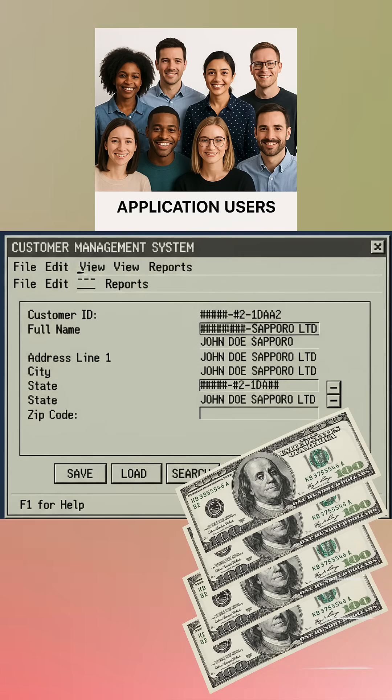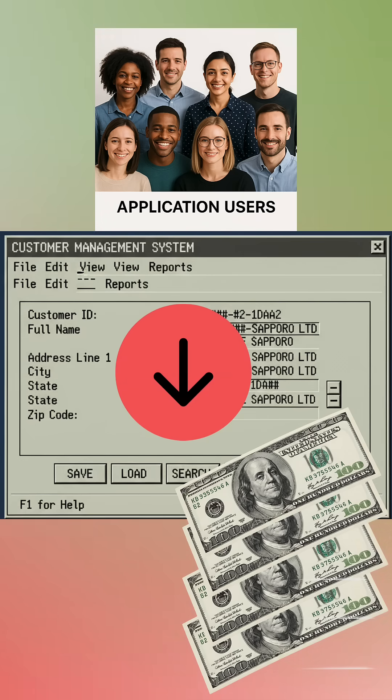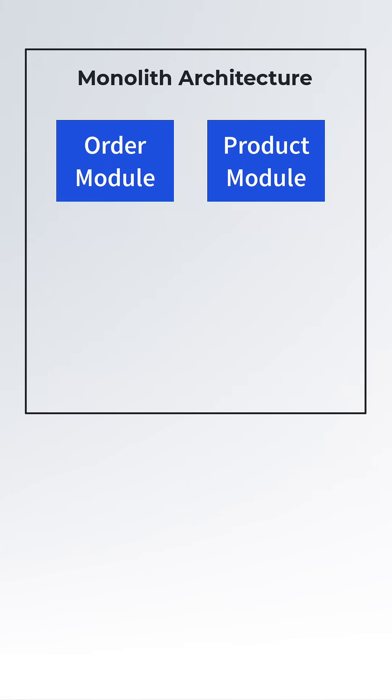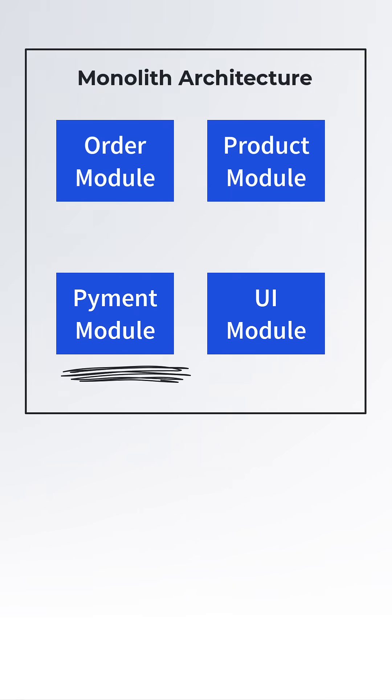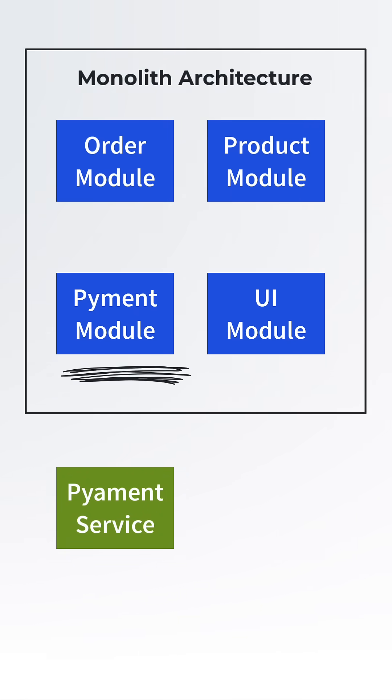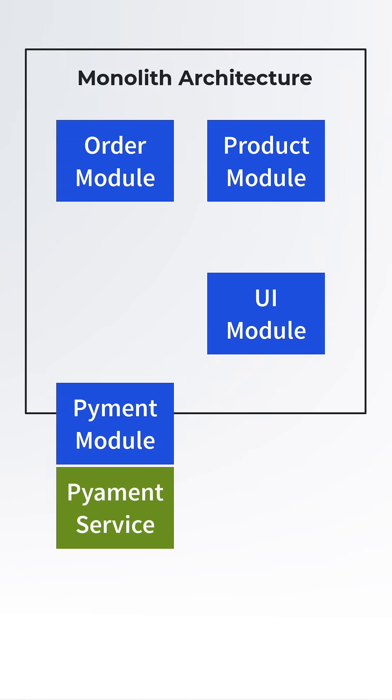Your monolith application is built on top of different modules — an order module, a product module, a payment module, and so on. As a developer, you first pick a small module, say the payment function, take it out, and build a new microservice for the payment service.